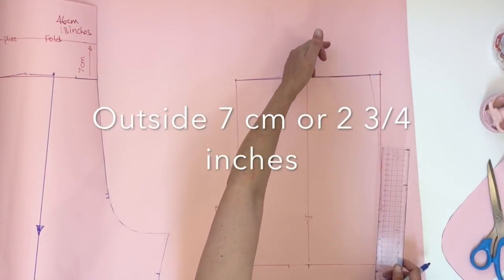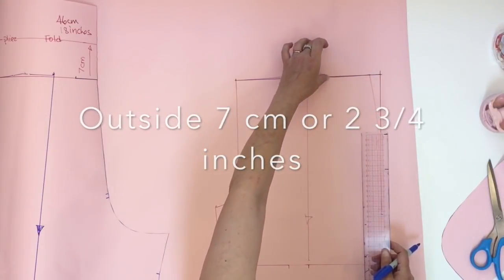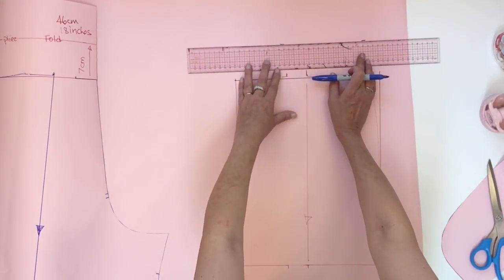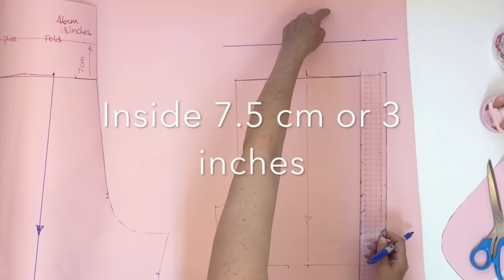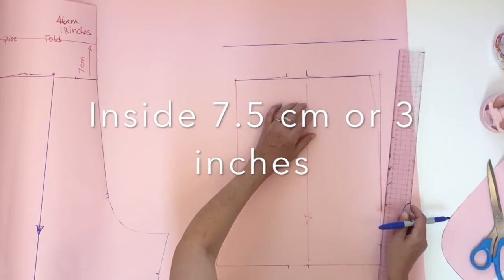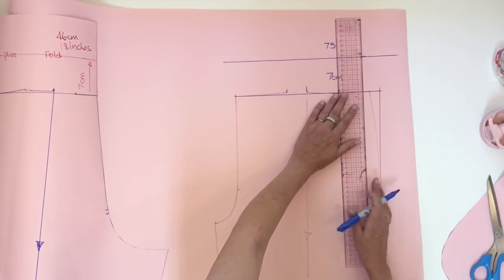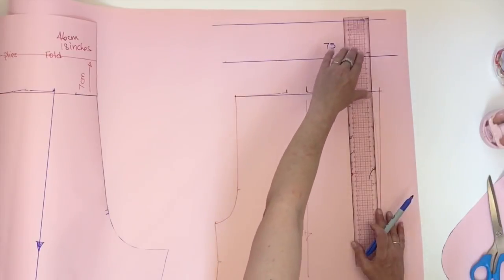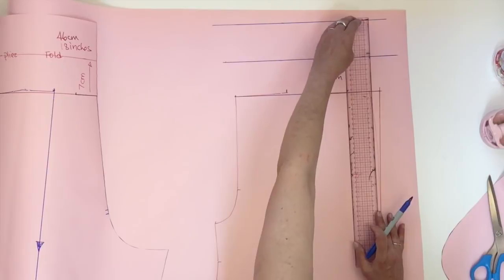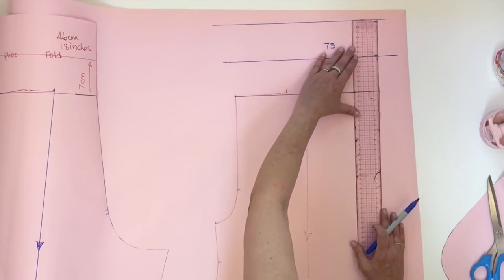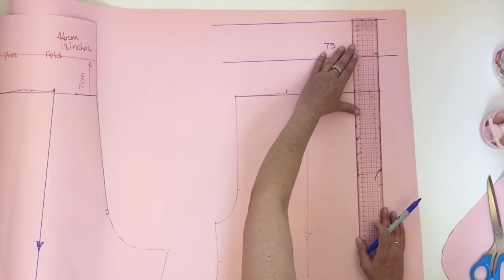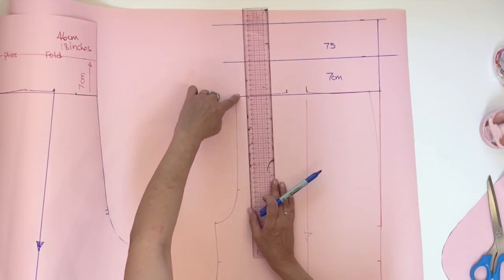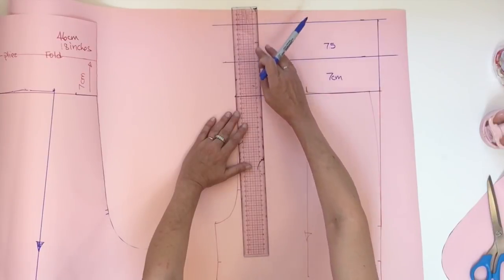Now we're going to measure the seven centimeters for the outside part, then the inside part 7.5. Now we connect with the square from one of these two lines, connect the two centimeters out and the center front crotch and waist point square with one of the two lines.